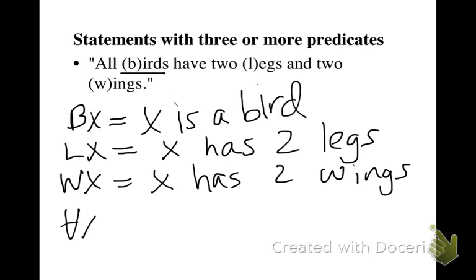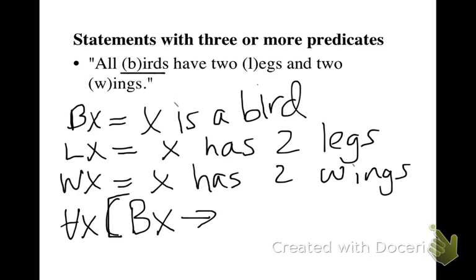So we say: for every x, if x is a bird, then x has two legs and x has two wings — we have two predicates in the consequent.